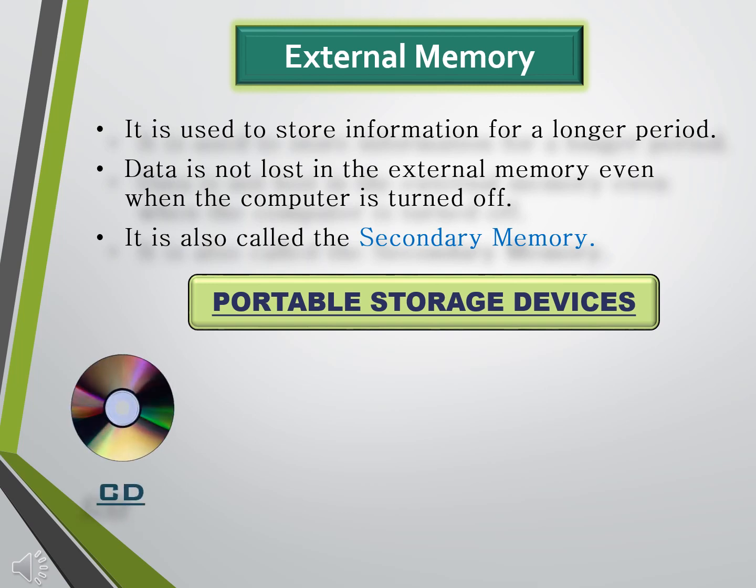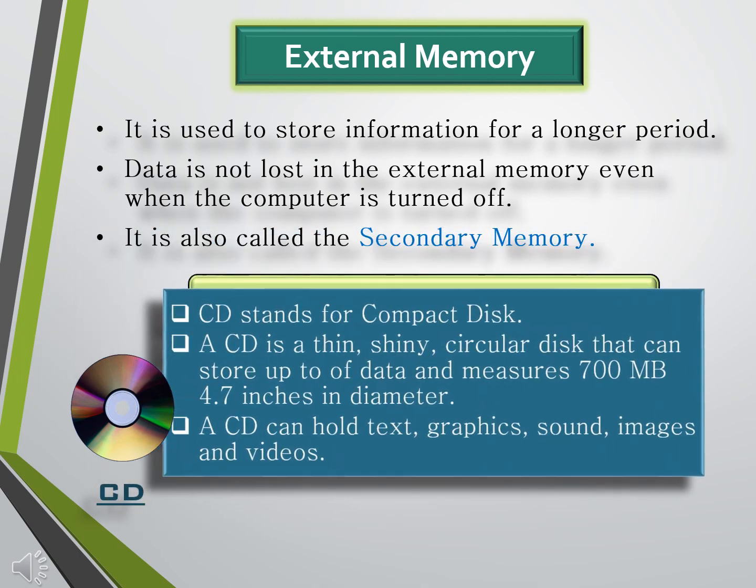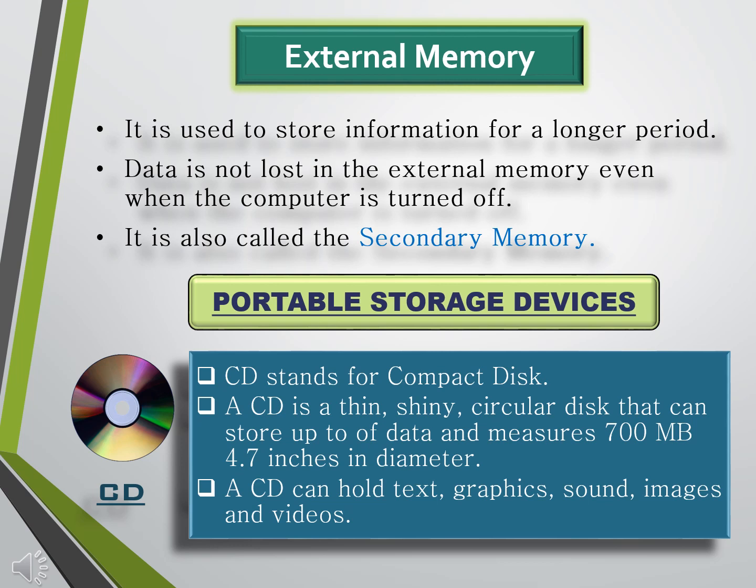CD: The full form of CD is Compact Disc. It is an optical storage device. A CD is a thin, shiny, circular disk that can store up to 700 MB of data, with measurements of 4.7 inches in diameter. We can store text, graphics, sound, images, and videos on a CD. To access data from a CD, we need to place it on the CD drive, which is located in the front panel of the CPU box.